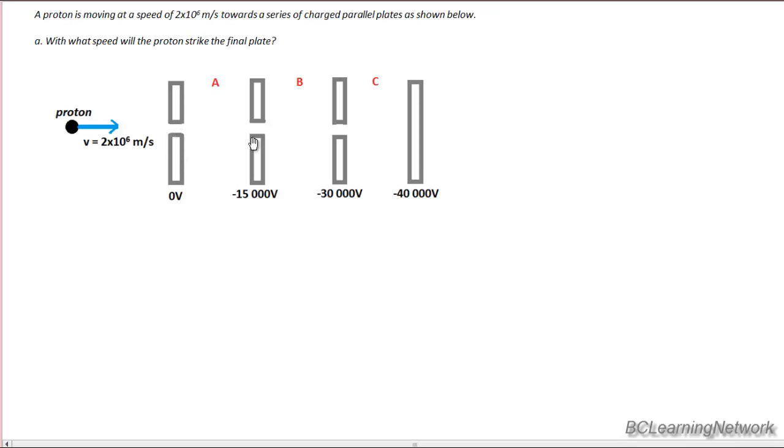There's a tiny little hole in each of the first three plates to allow the proton to pass. At the back, the final plate is solid. The plates are charged, the first one being 0 volts.